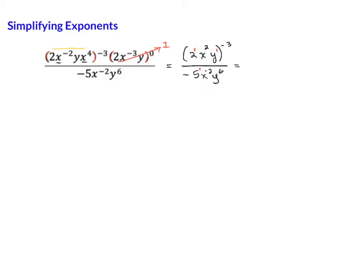Now, again, this negative 3 is outside of these parentheses, so that means everything inside here gets that negative 3. Again, a power to a power is multiplying, and we can distribute.